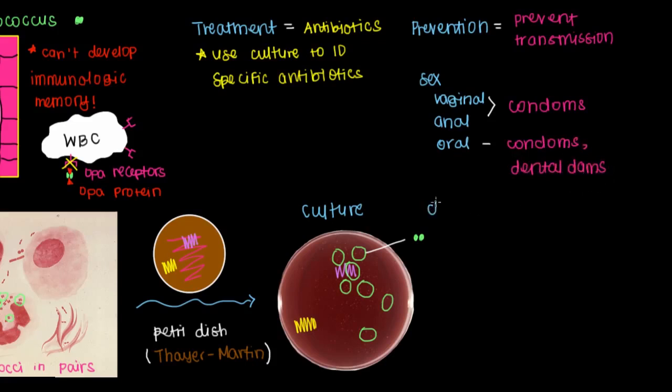Finally, the last way that you can spread gonorrhea is from a mother who's infected to her newborn during childbirth. Actually the method of preventing transmission here is just to treat the mom, which again would be through using antibiotics. Because gonococcus lives predominantly in humans, by preventing the transmission of this disease, we can actually move in the direction of eradicating it altogether.